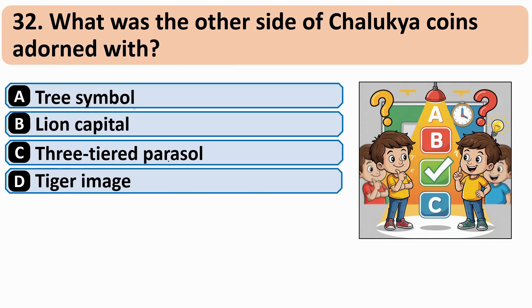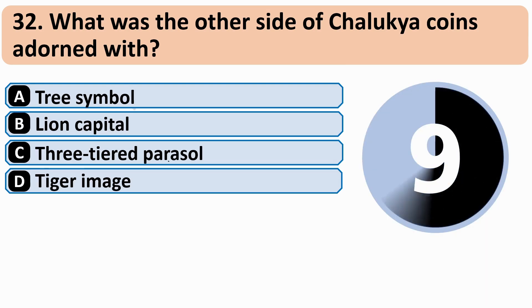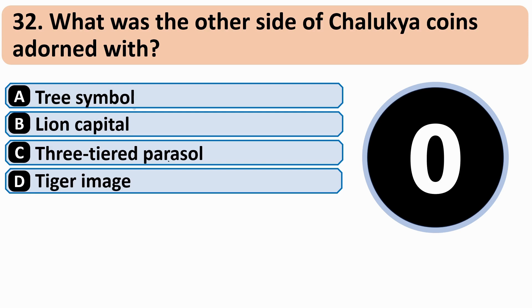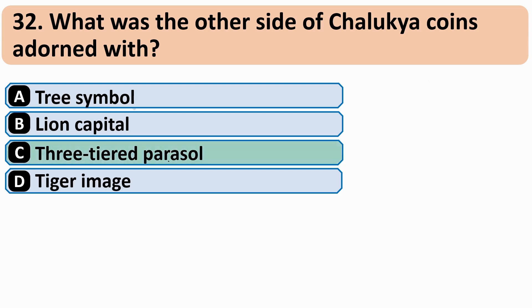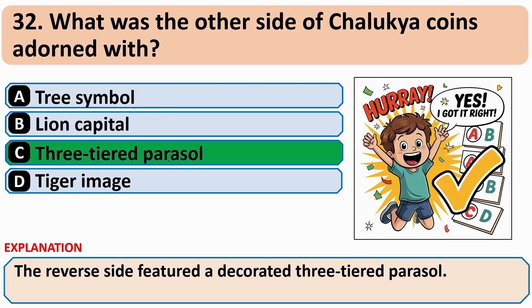What was the other side of the Chalukya coin adorned with? The correct answer is C — a Three-Tiered Parasol.